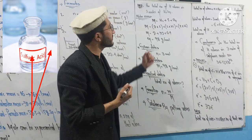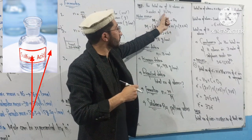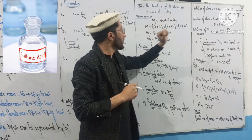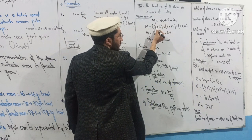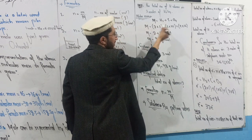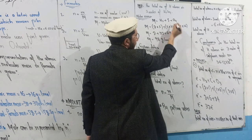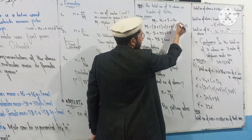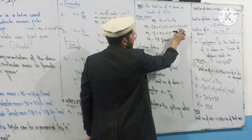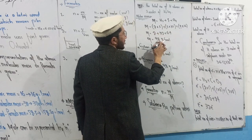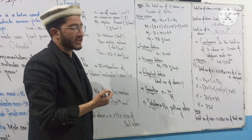For mass calculation using a formula, consider H₂SO₄ (sulfuric acid). Hydrogen: 2 atoms × mass 1 = 2. Sulfur: 1 atom × mass 32 = 32. Oxygen: 4 atoms × mass 16 = 64. Total molar mass = 2 + 32 + 64 = 98 g/mol.